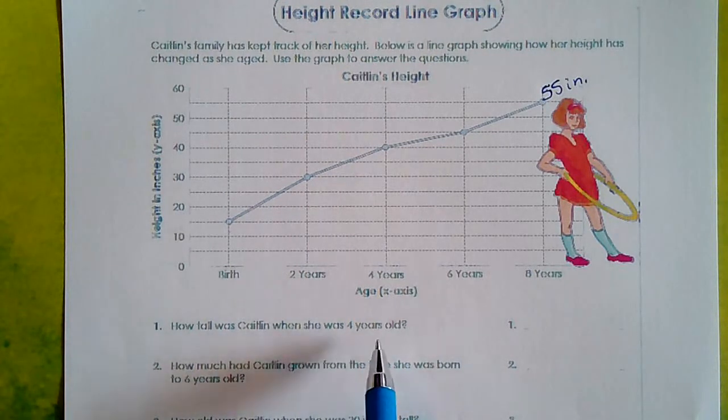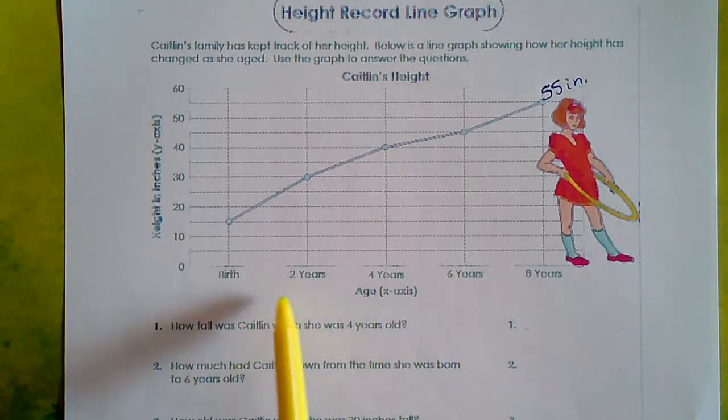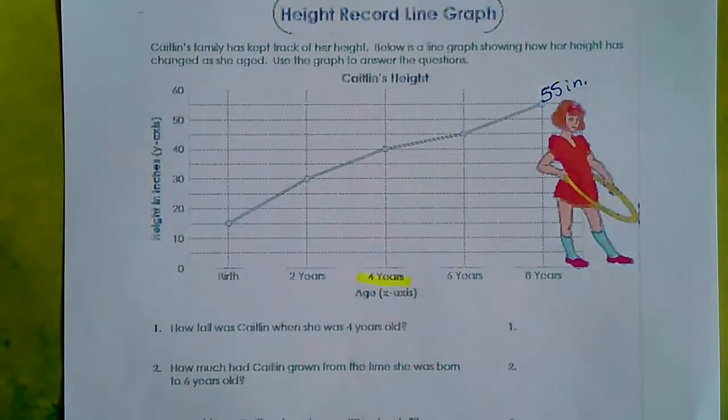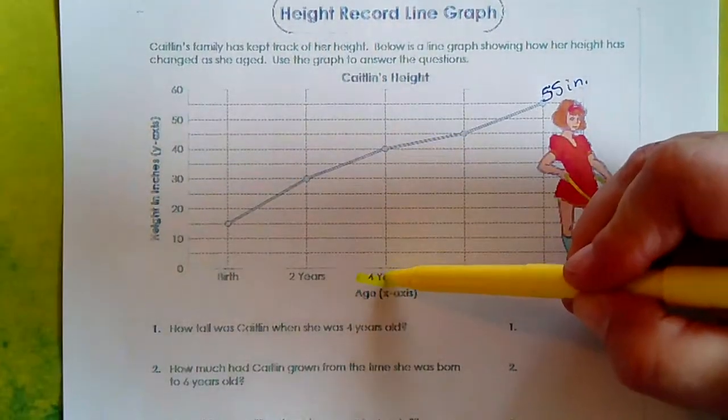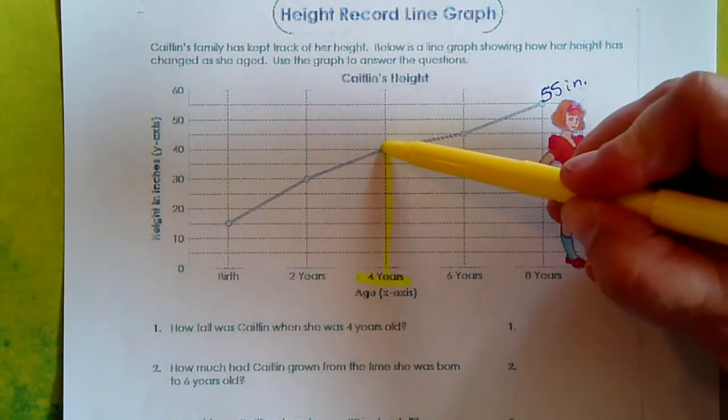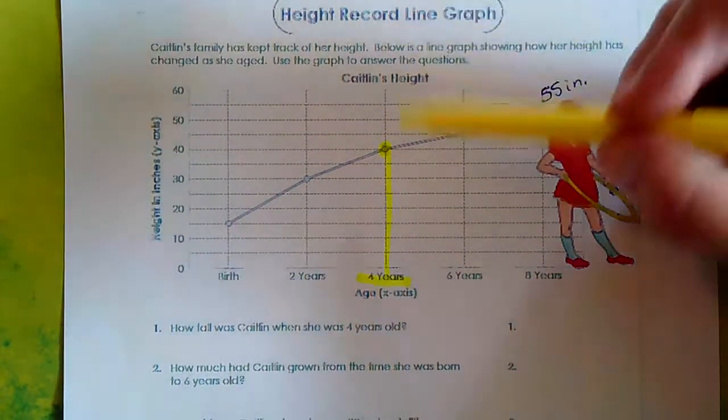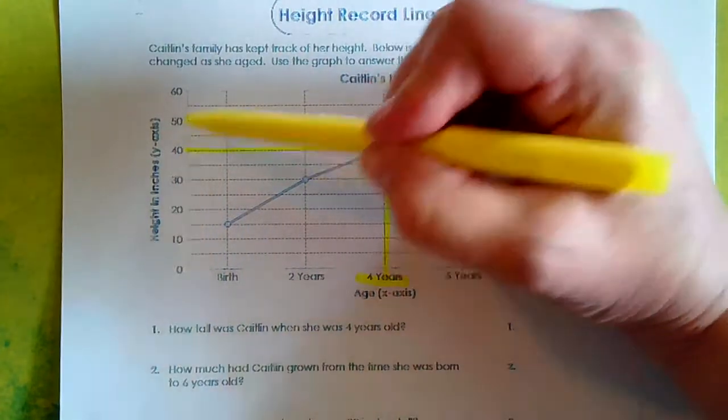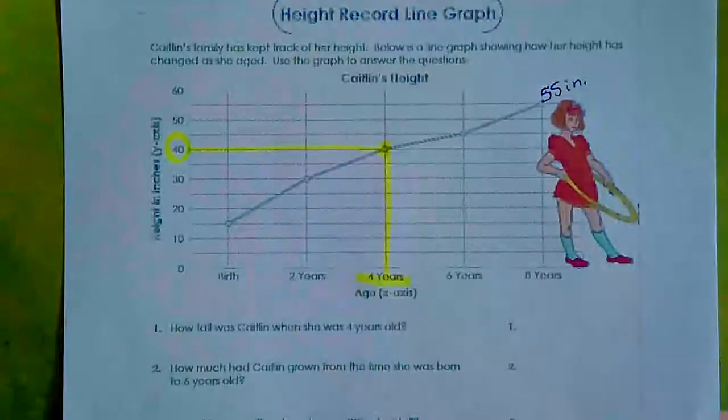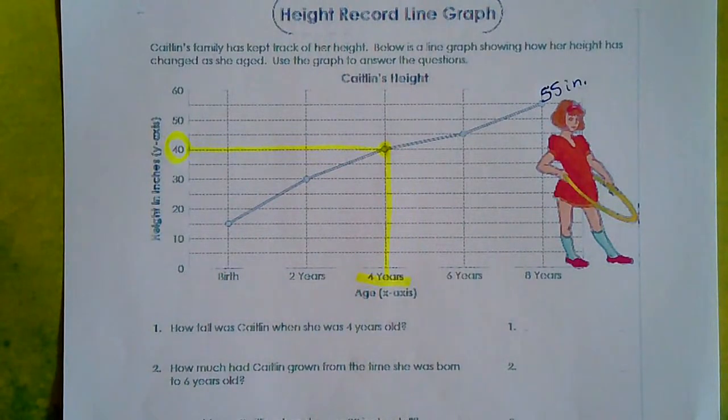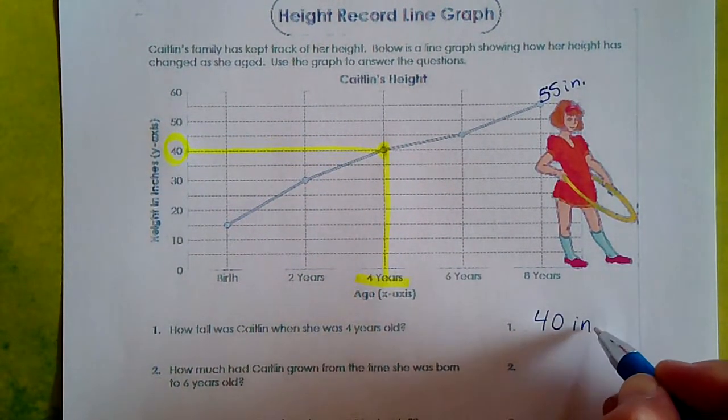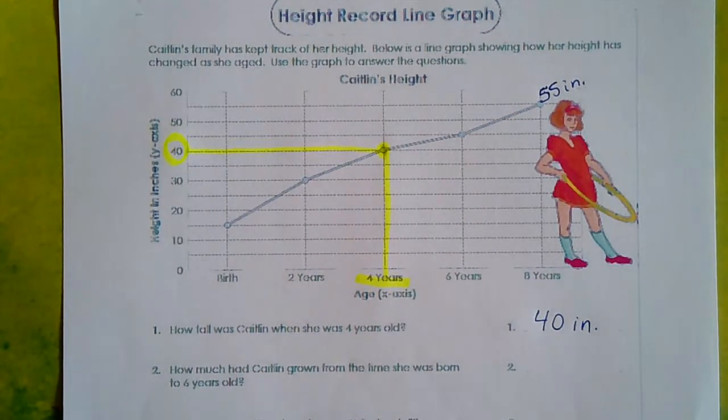Okay. How tall was Caitlin when she was four years old? Well, let's look on her x-axis that's labeled age. And we're going to find four years old, which is right here. We're going to follow that line up until we get to our point right there. And we're going to go over and see what number we get. And this shows us that she was 40 inches tall when she was four years old. So we're going to put 40 inches. Remember, I-N stands for inches.